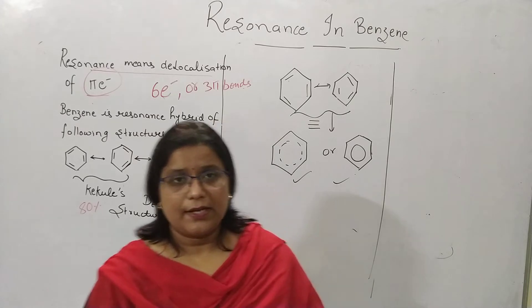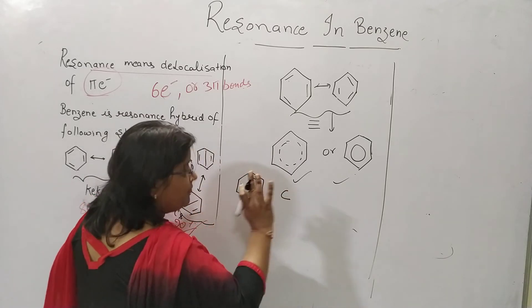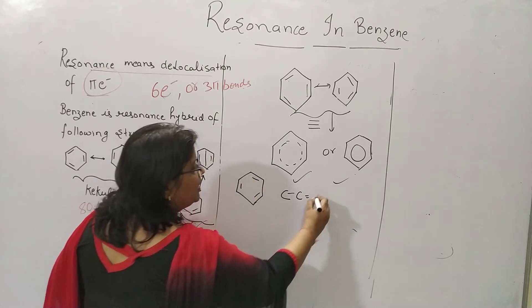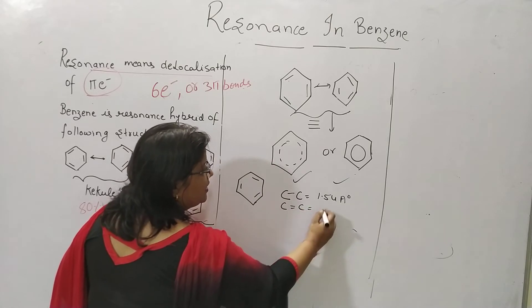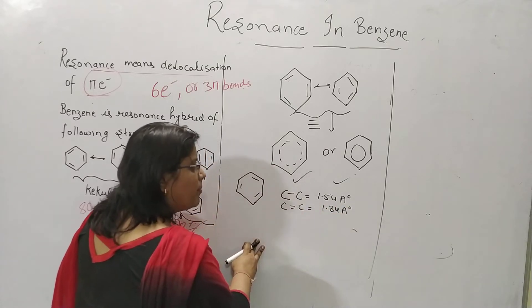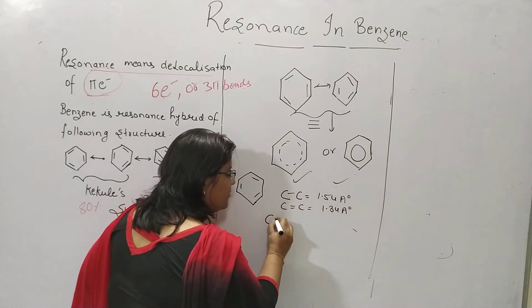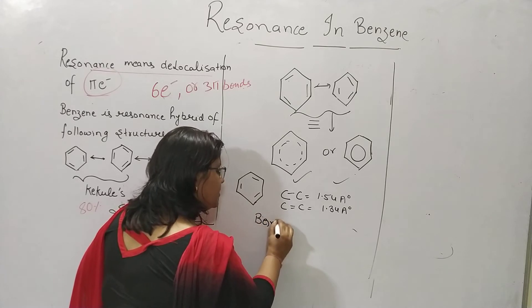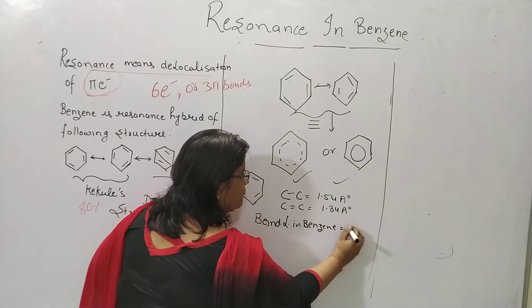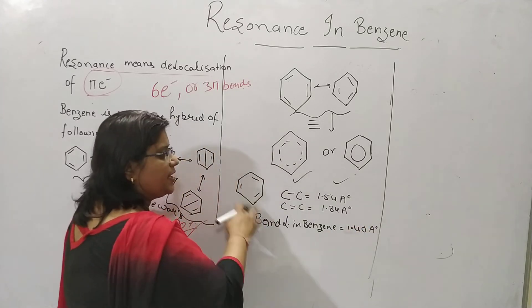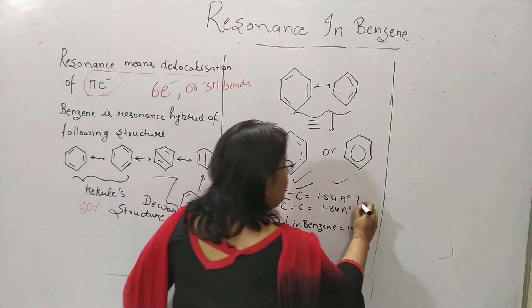In benzene, if it has a complete single bond, the bond length would be 1.54 angstrom. If it has a complete double bond character, it would be 1.34 angstrom. But the actual bond length in benzene is 1.40 angstrom — it is intermediate between the single bond and double bond structures. Taking the average of 1.54 and 1.34 gives approximately 1.44 angstrom, which is somewhat close to the observed 1.40 angstrom.